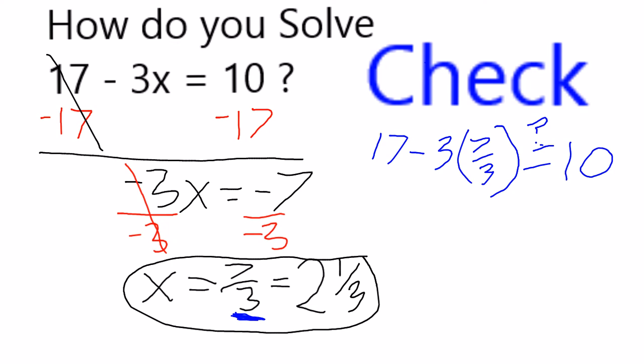I'm going to take that version, plug it back into my original equation, and make sure that it works out. So this becomes 17 minus 3 times 7 over 3. The 3s cancel nicely, and this is like 17 minus 7, which of course is equal to 10. So the answer does check out.